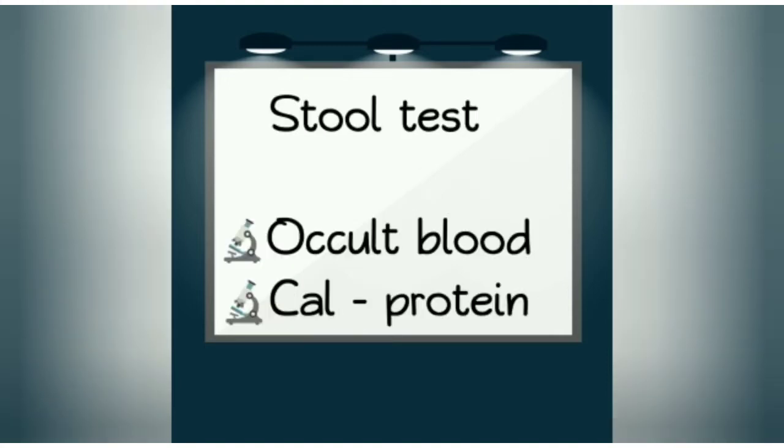Elevated WBC and sedimentation rate is indicative of inflammation. Liver function test and renal function test are also done to check the proper functioning of the liver and kidney respectively. A stool test for occult blood is done to check the presence of blood in stool microscopically. Elevated calprotein shows inflammation in the intestine, but sometimes it may be elevated before the appearance of symptoms, which can give a false notion about this test.